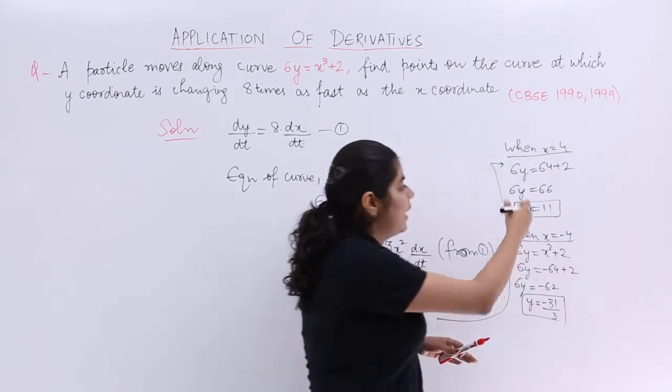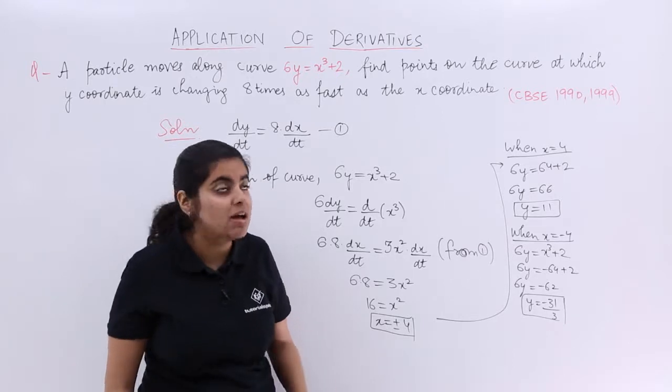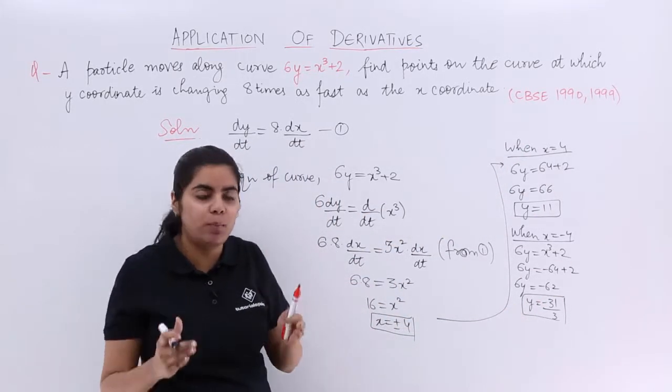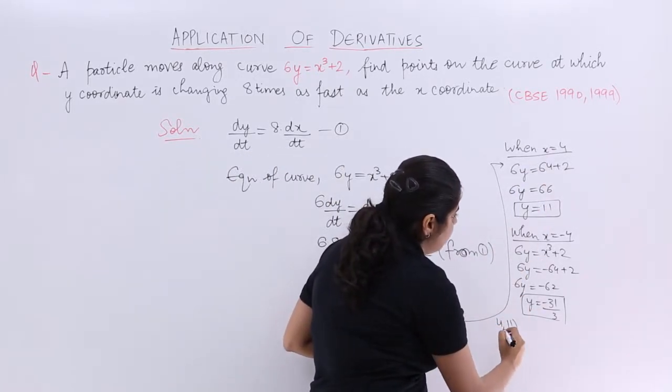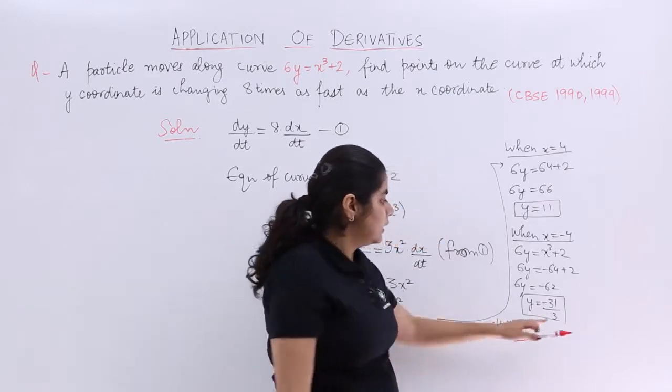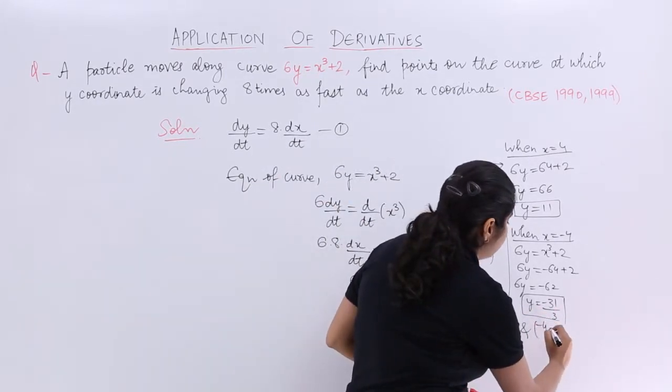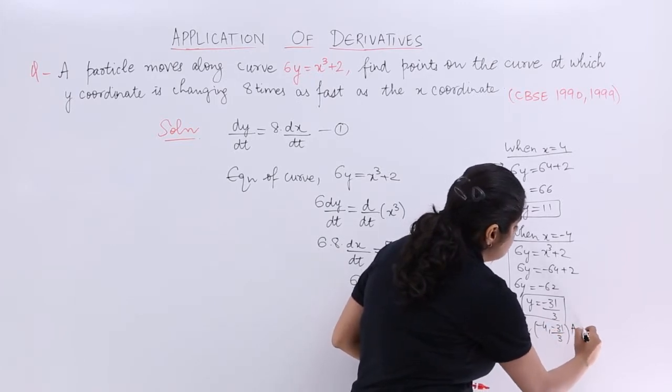So you have these values of y corresponding to the different values of x. But the answer is not left here. The answer is you have to find the 2 points. So the 2 points are what? The first point is 4 comma 11, and the second point that is required is minus 4 comma minus 31 by 3, and that is your answer.